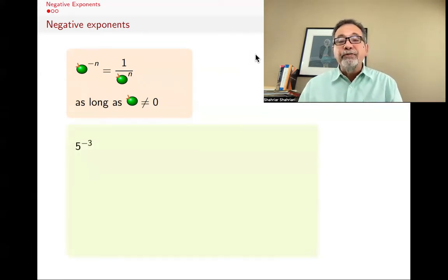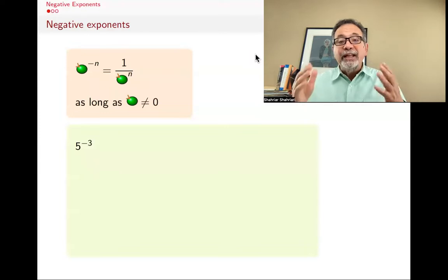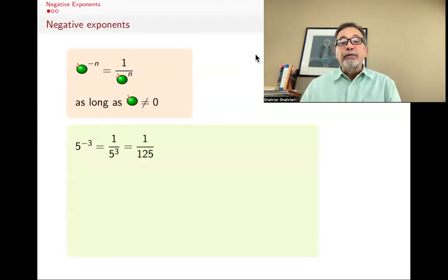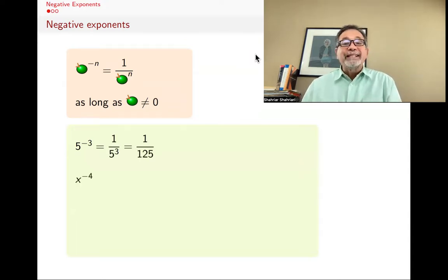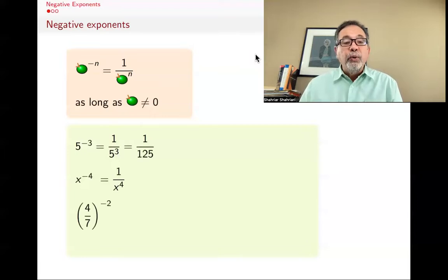So for example, what does five to the negative three mean? It's not a negative number. Again, it's a fraction. What fraction? One over five cubed, and one over five cubed is the same as one over 125. What is x to the negative four? It's one over x to the fourth.